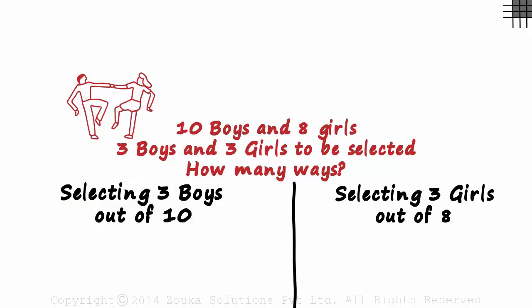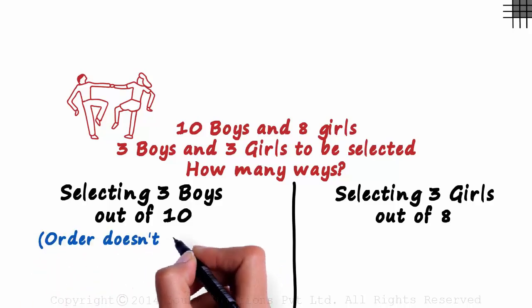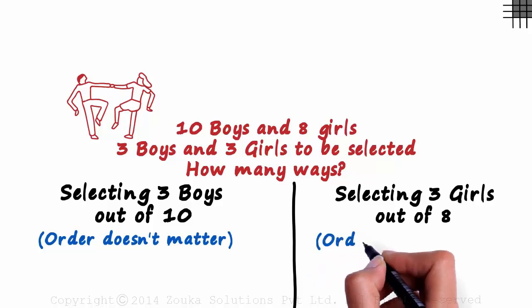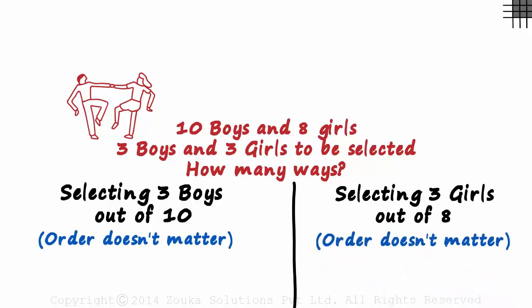There isn't. Selecting B1, B2, B3 is the same as selecting B2, B1, B3 or B3, B2, B1. We are just selecting 3. And similarly, the order does not matter for selecting 3 girls out of 8.